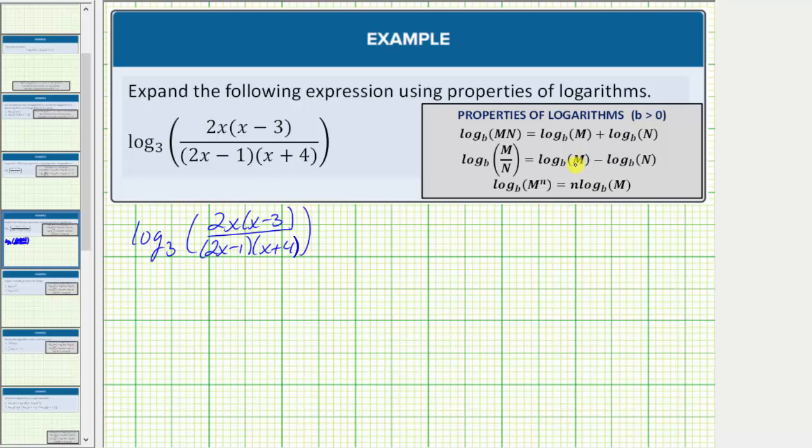Notice how we have the log of the numerator minus the log of the denominator. So in our case, this is equal to log base three of the numerator, which is two x times the quantity x minus three, and then we have minus log base three of the denominator, which is the quantity two x minus one times the quantity x plus four.